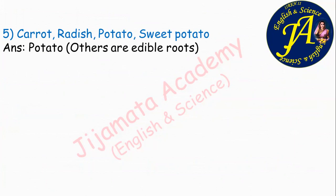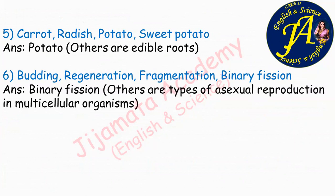Budding, regeneration, fragmentation, binary fission. The correct answer is binary fission, because budding, regeneration, and fragmentation are types of asexual reproduction in multicellular organisms, while binary fission is the type of asexual reproduction in unicellular organisms like protists, amoeba, parabasium, and euglena. Therefore, binary fission is the correct odd one.